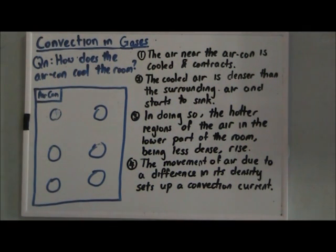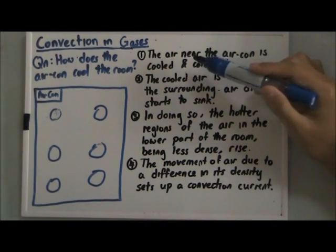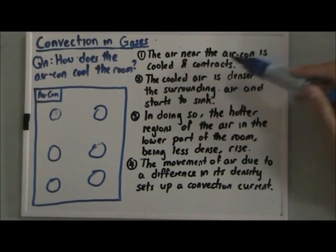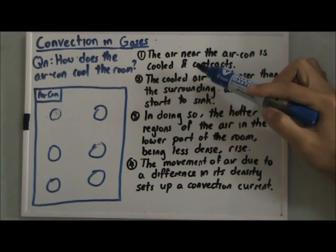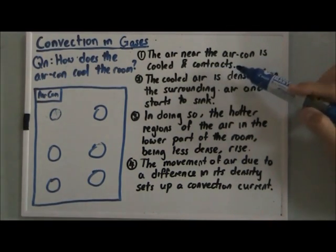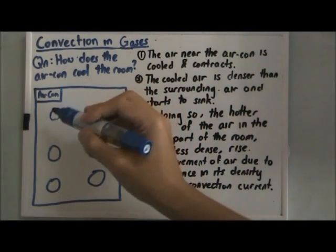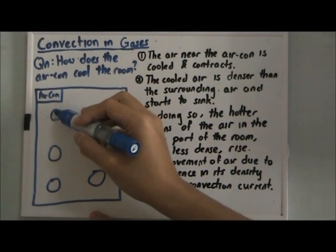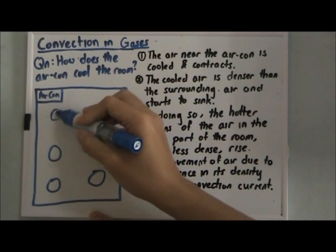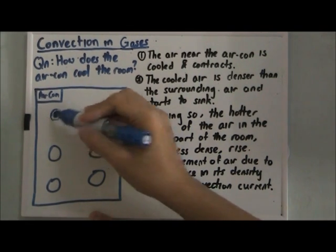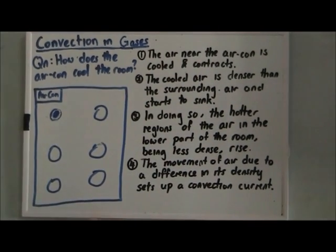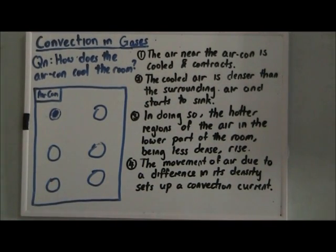To approach this question, there are altogether four points. Point one: the air near the aircon is cool and contracts. The air in this region takes in the heat energy, then cools down and contracts.